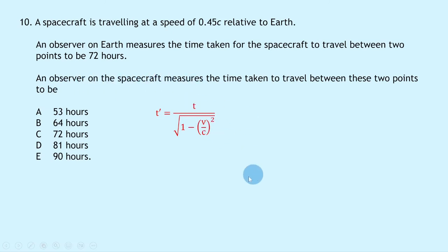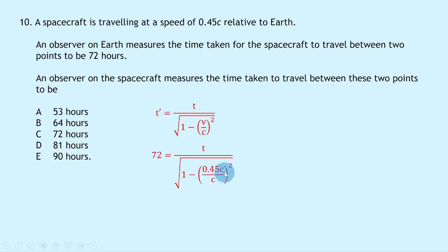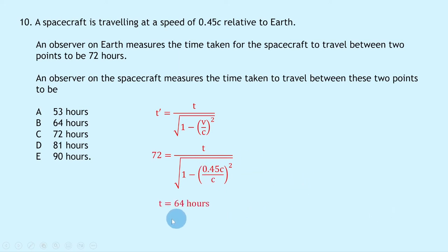Substituting: 72 = t / √(1 − 0.45²). Calculating: 0.45 squared, then 1 minus that, then the square root, then multiplying by 72 gives t = 64 hours. As a check, the dilated time t' should be longer than proper time t: 72 > 64, which makes sense. So the answer is B.